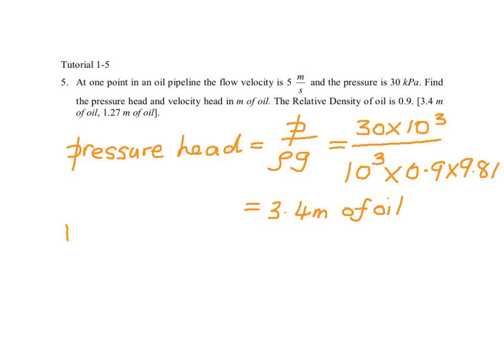Next, we need to calculate the velocity head. Now this works out to V squared over 2G. Now given the velocity is 5 meters per second, 5 squared over 2 times 9.81,